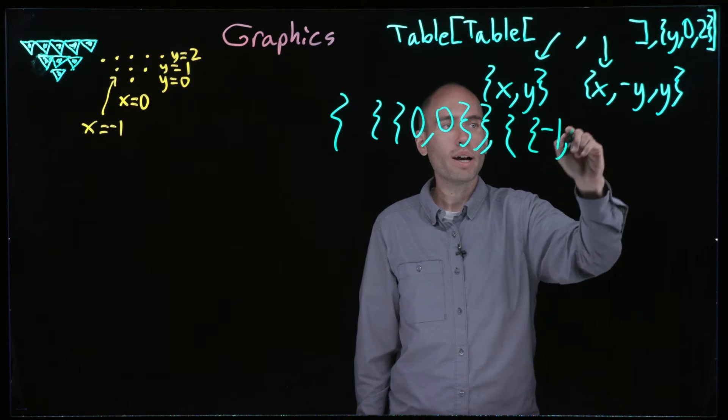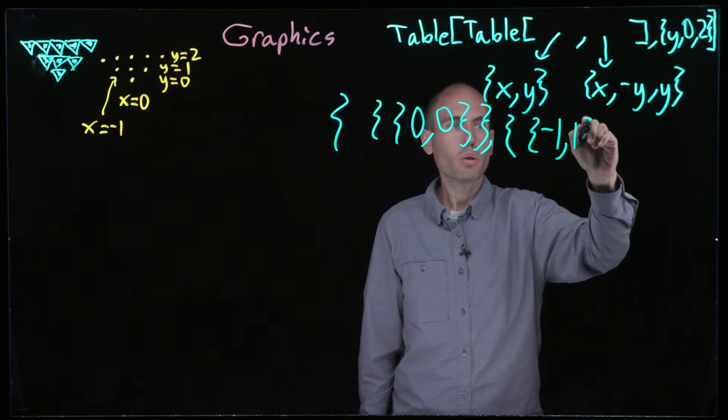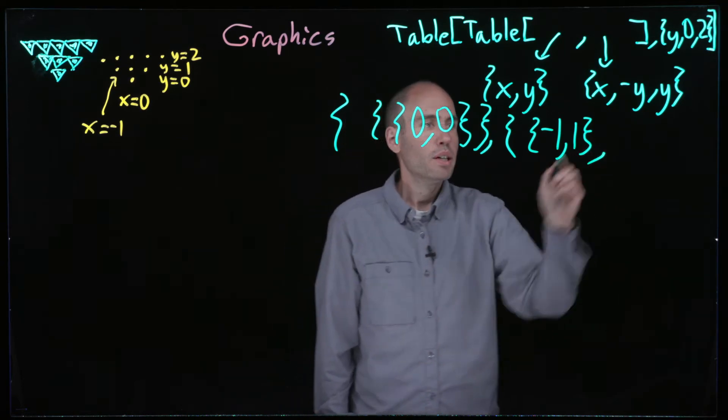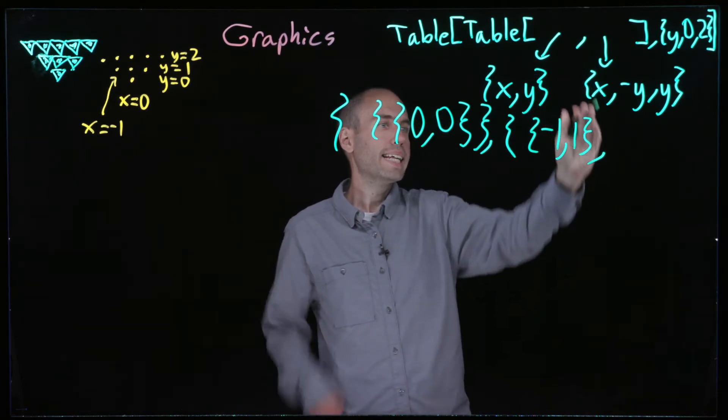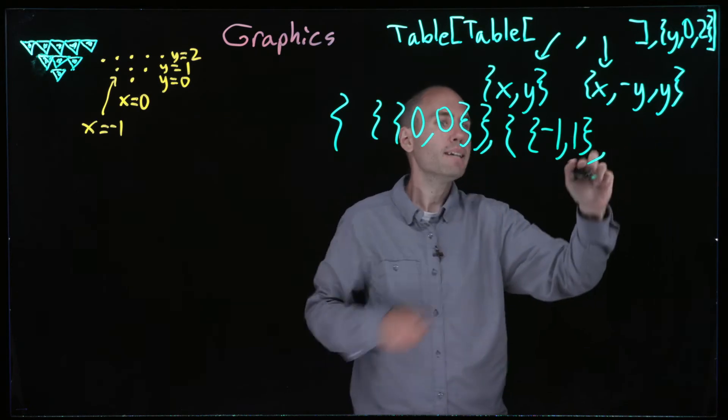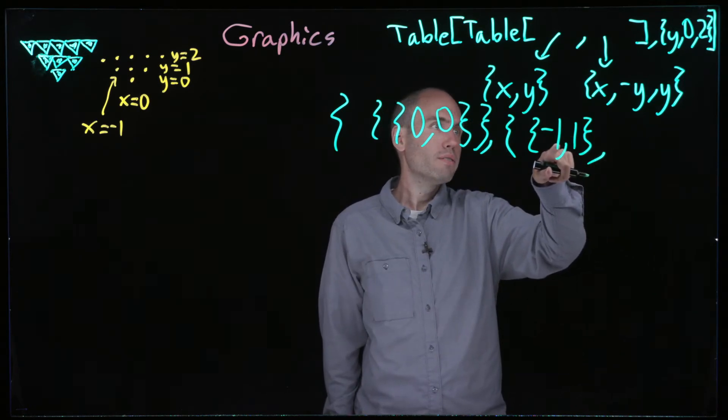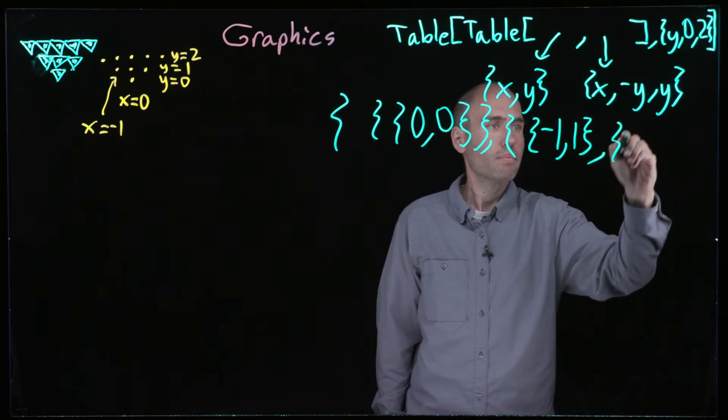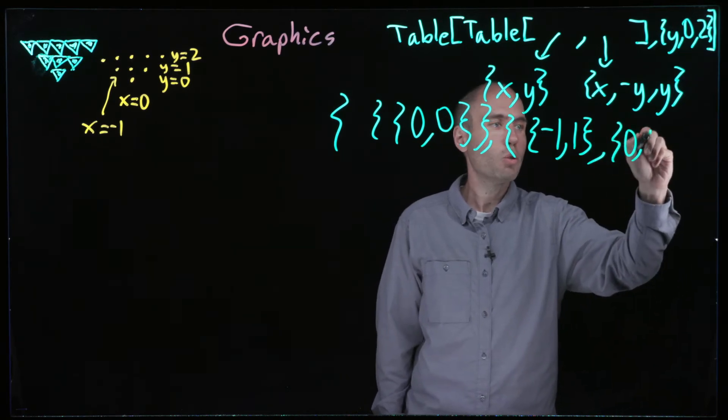Let me do one more and then I'm going to stop. This inside list is going to be like three, so next we're going to have zero comma one. X is zero, y is one.